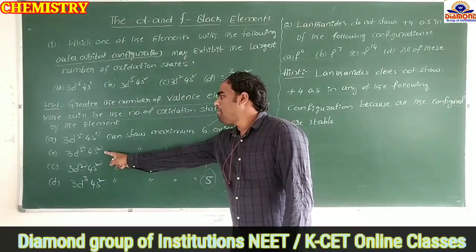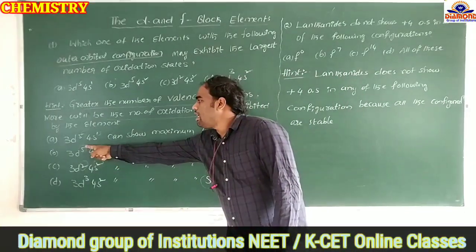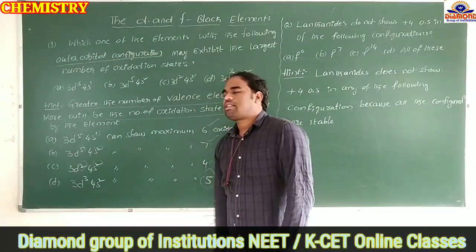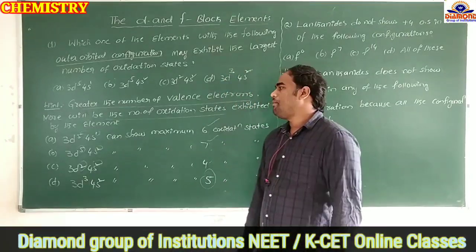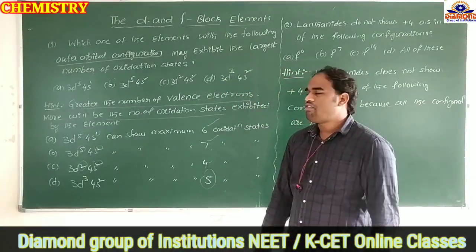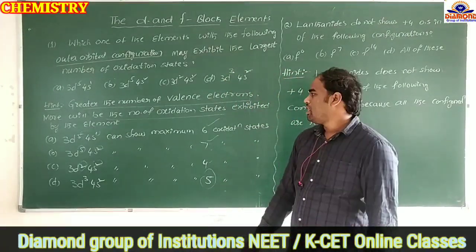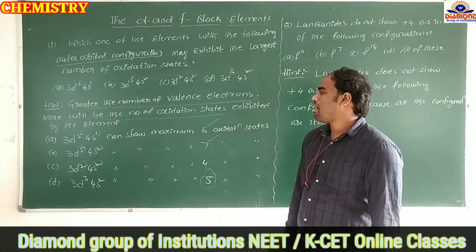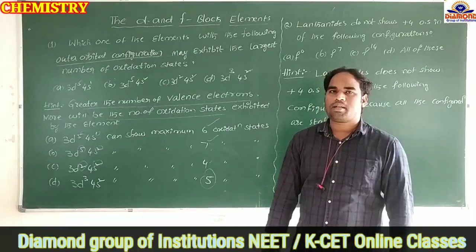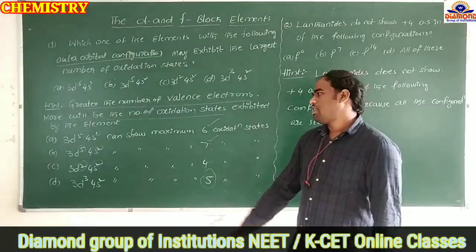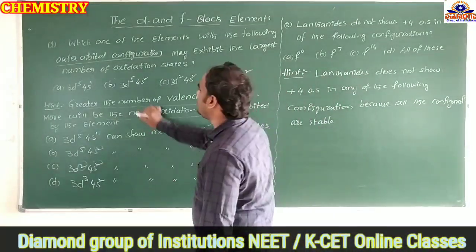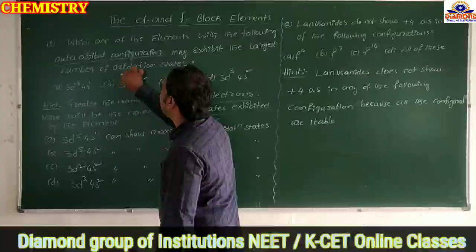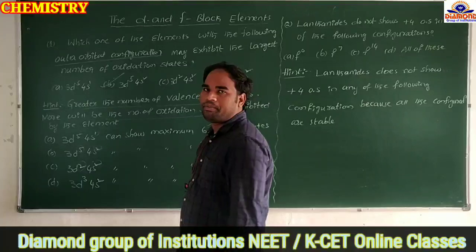Option B (3d⁵4s²) has the greatest number of valence electrons — 7 in total — therefore the maximum number of oxidation states possible is 7. So option B is the correct answer.